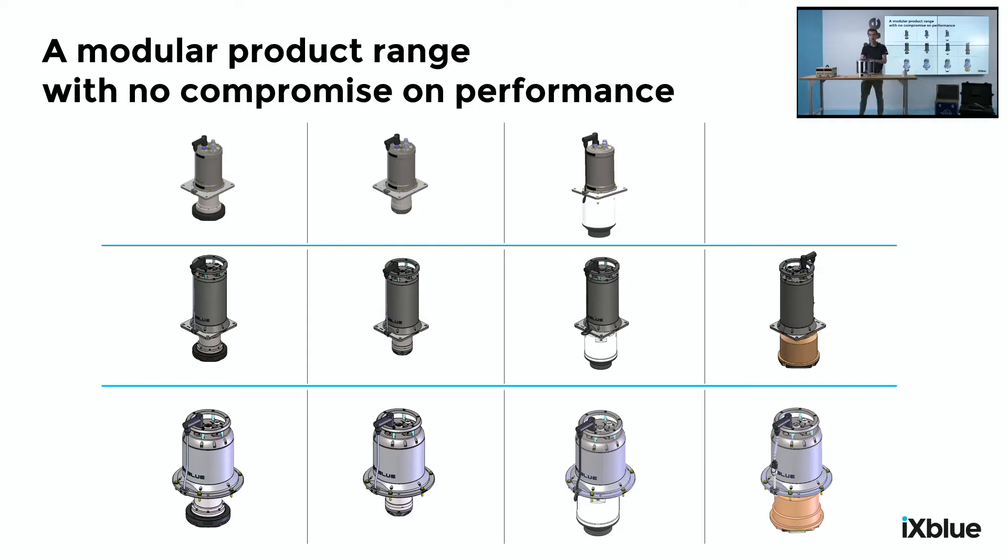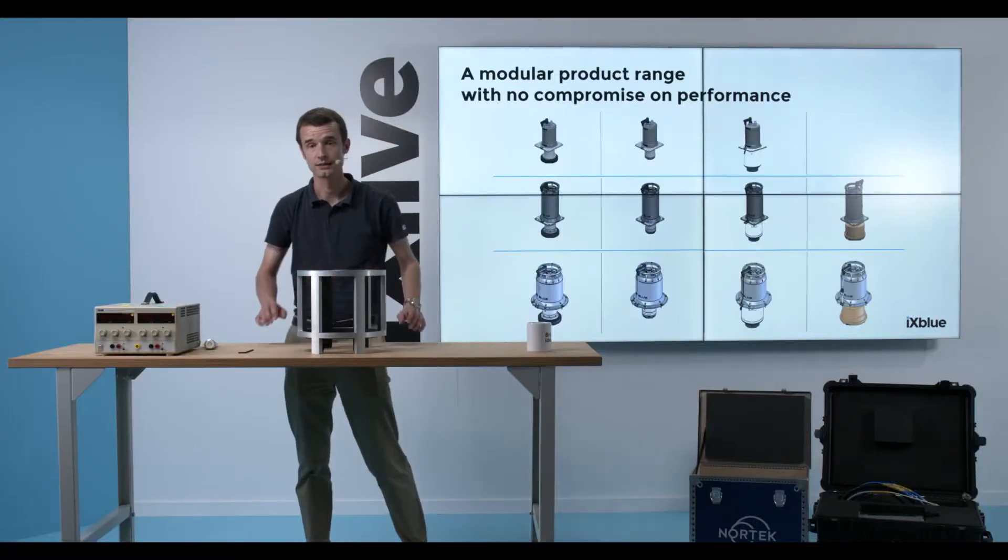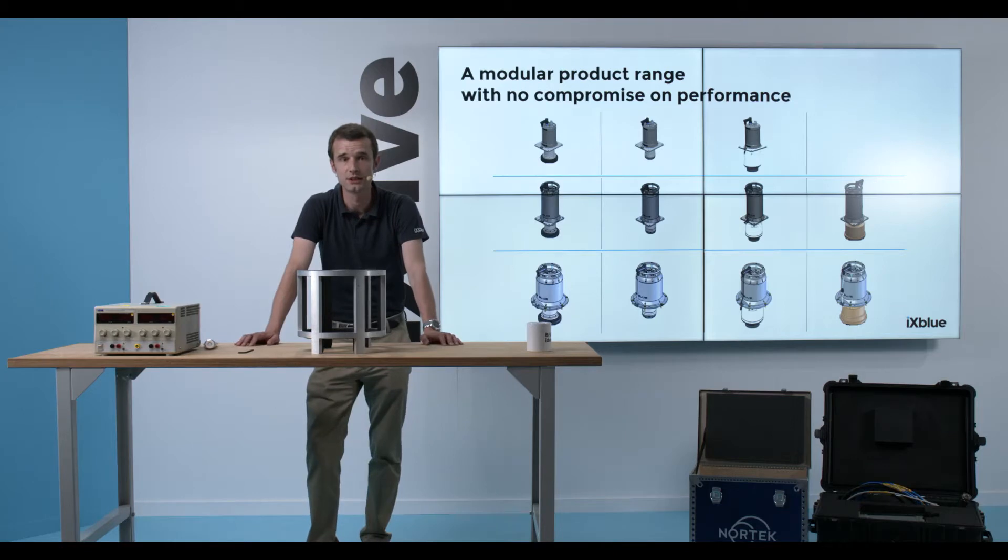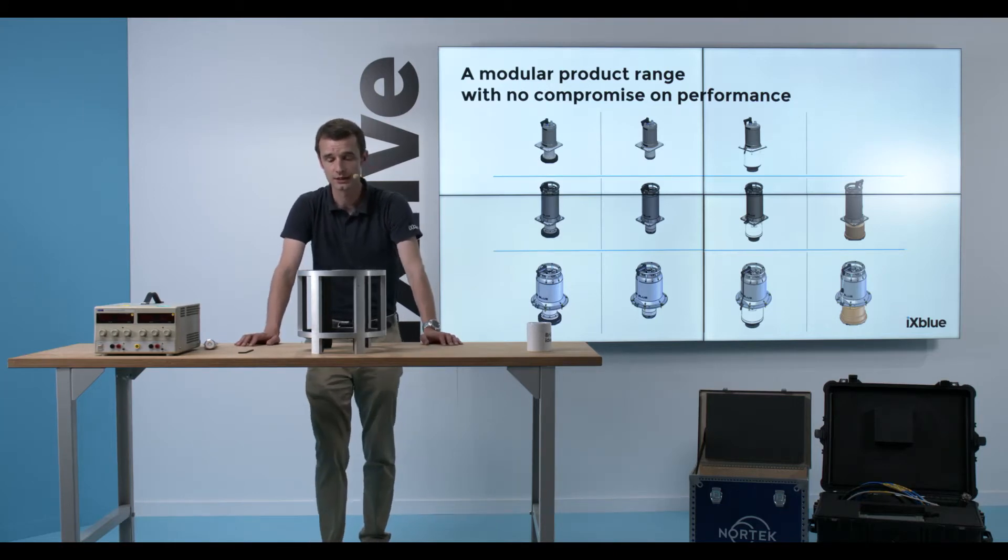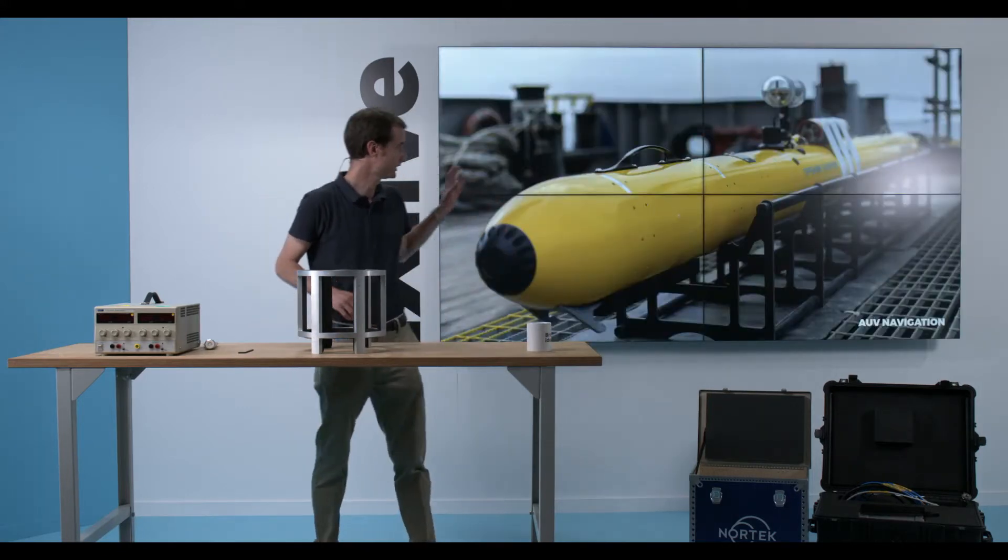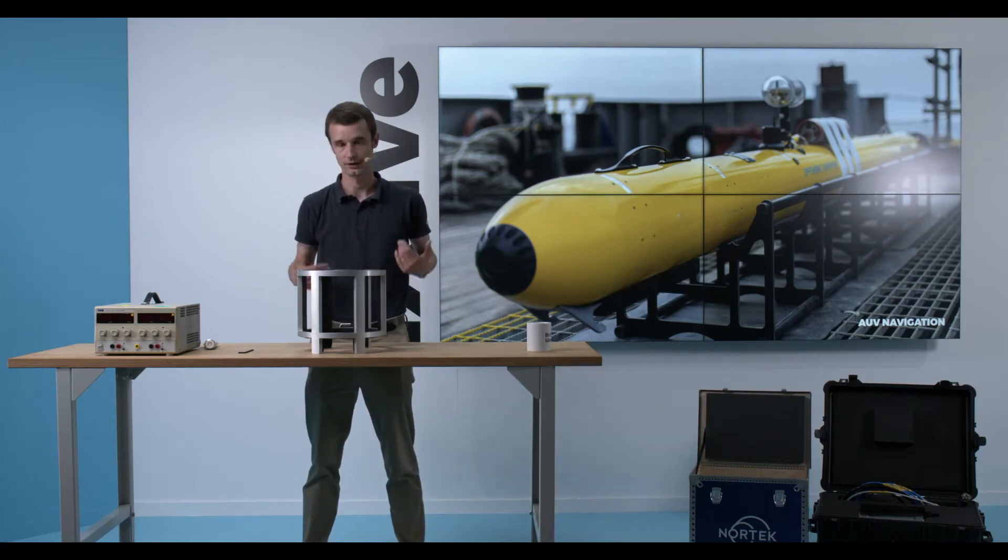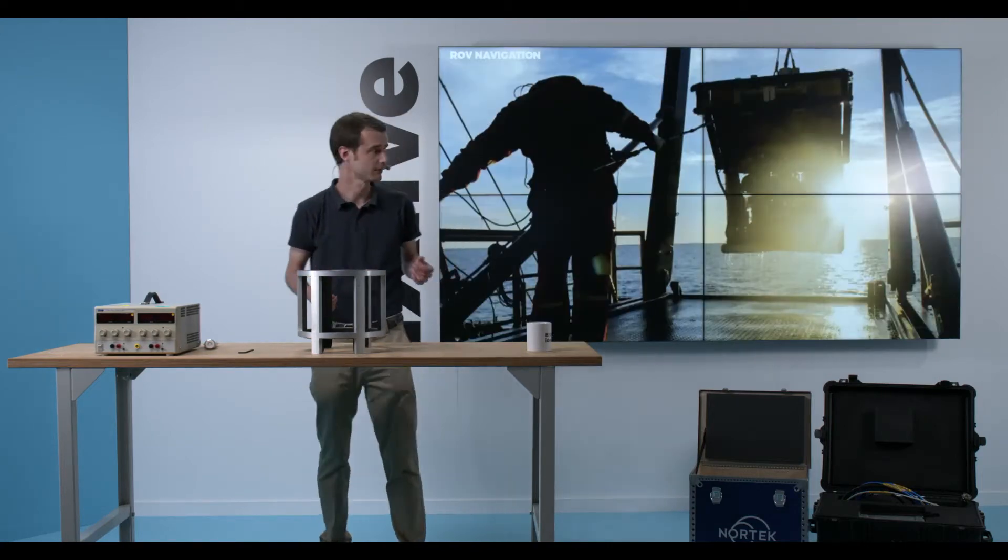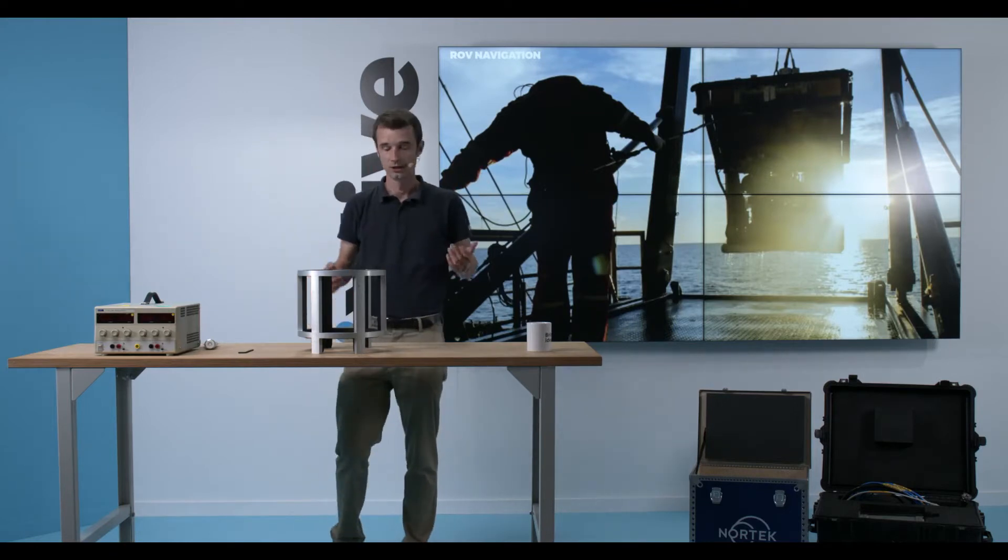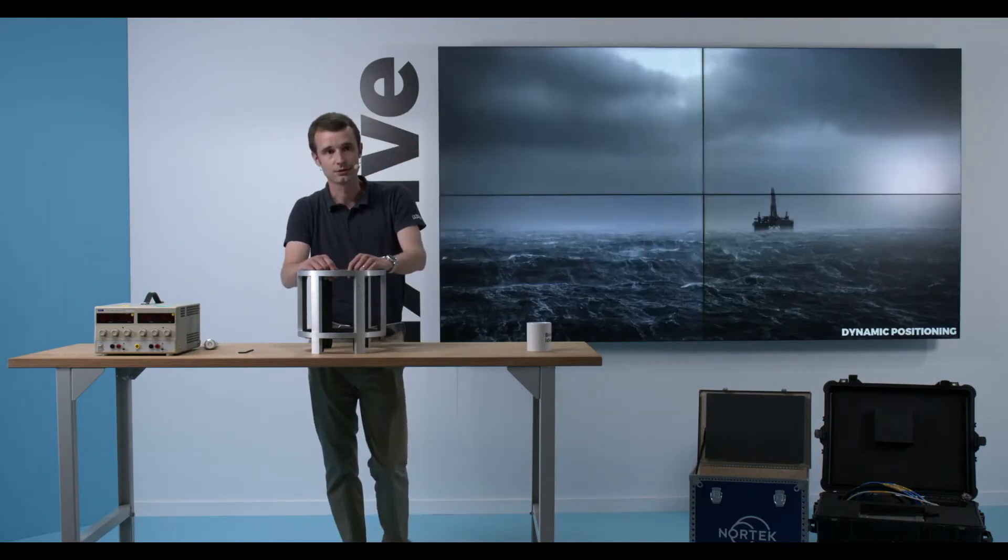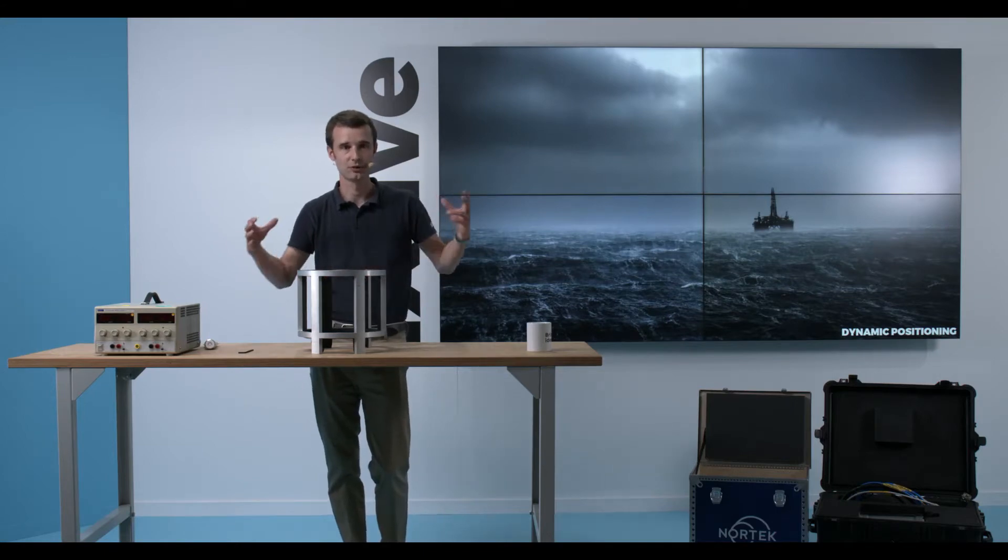The INS DVL are typically used in subsea navigation and positioning where positioning sensors are not available. Traditionally, we'll see those kits together in an AUV, autonomous underwater vehicle, or in an ROV, remotely operated vehicle, or on DP structures, which are either platforms or big vessels that need to maintain an accurate position at all times to be static.